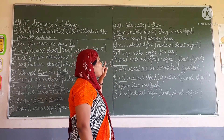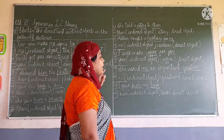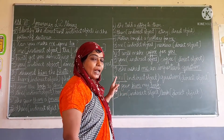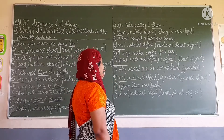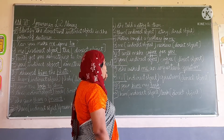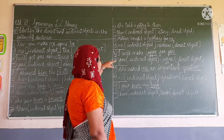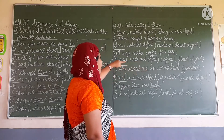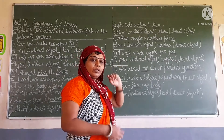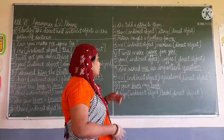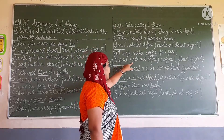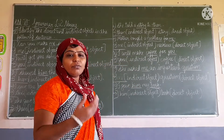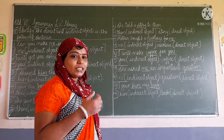Mother bought a necklace for me. So here 'me' is the indirect object and 'necklace' is the direct object. Next: I will make coffee for you. 'You' is used for some person, so 'you' is the indirect object and 'coffee' is the receiver of the action — so 'coffee' is the direct object.